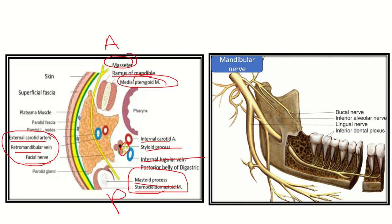The structures closely related to the parotid gland are the external carotid artery, retromandibular vein, and facial nerve with its five branches. These structures are at great risk during the operation of the parotid gland. Here we can see the mandibular nerve, which is a branch of the trigeminal nerve. It lies on the inner side of the mandible, while the parotid gland lies outside and behind the mandible, so there is less risk of injury to this mandibular nerve.